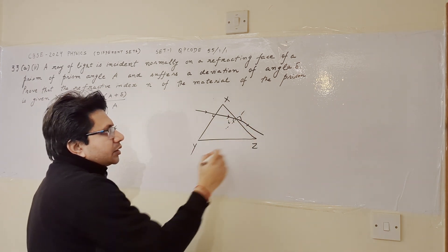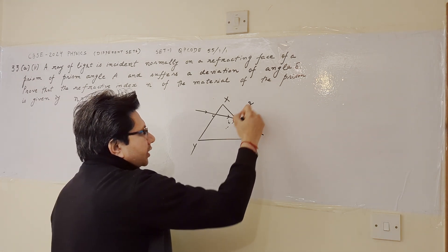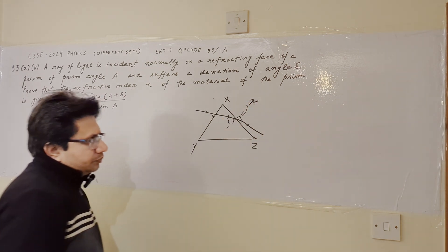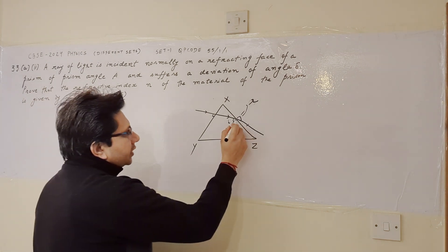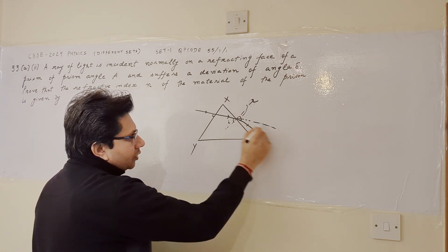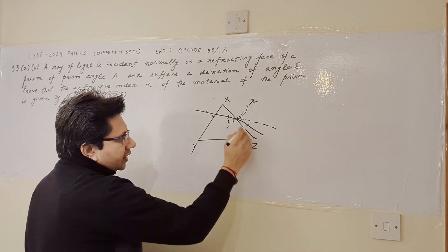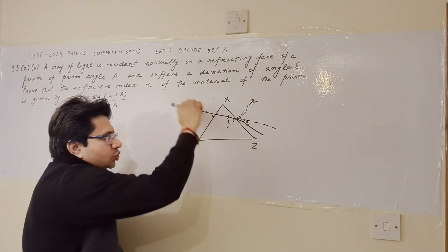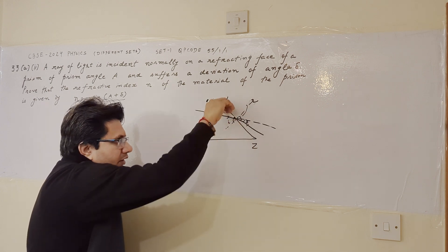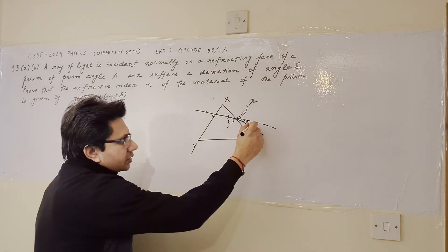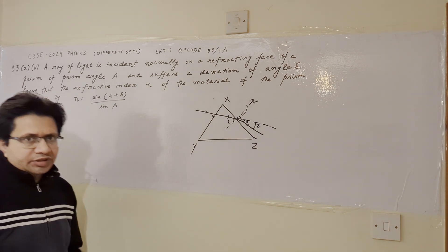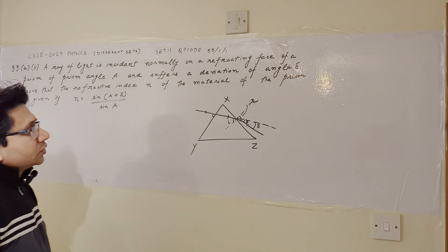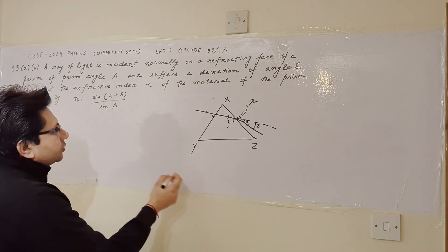This is because when a ray travels from a denser medium to a rarer medium, it deviates away from the normal. The emergent ray makes an angle of refraction r with the normal. The deviation angle delta is the angle between the original direction of the ray and the emergent ray — the angle by which the ray is deflected at the second interface.